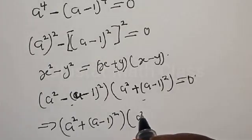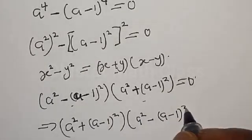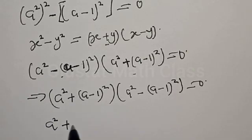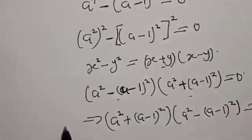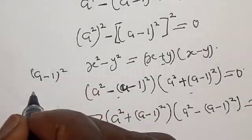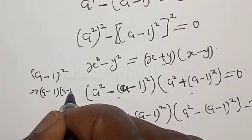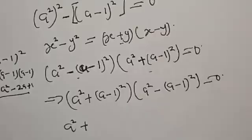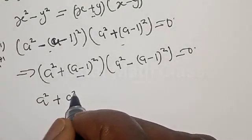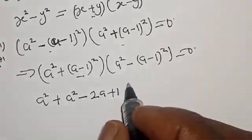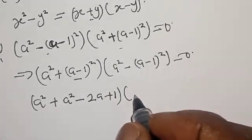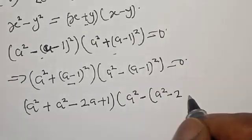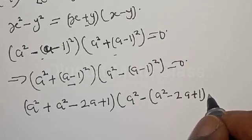This implies that we have (a² + (a-1)²) multiplied by (a² - (a-1)²) equal to zero. Now let's expand (a-1)²: that is (a-1) multiplied by (a-1), which gives a² minus 2a plus 1. So (a-1)² = a² - 2a + 1. Substituting, the first factor becomes a² + a² - 2a + 1, and the second factor becomes a² - (a² - 2a + 1).